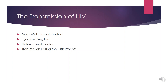HIV spreads only through certain body fluids from a person who has HIV: blood, semen, rectal fluids, vaginal fluids, or breast milk. HIV spreads mainly through male-to-male sexual contact or sharing injection drug needles with someone who has HIV. Heterosexual contact, breast milk, or vaginal fluids may also lead to transmission, and HIV may similarly be transmitted during the birth process from mother to baby.